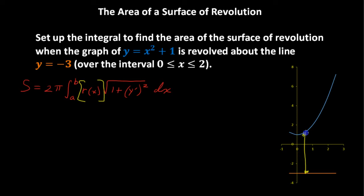So it's not just x squared plus 1. Let's draw this out. This distance is x squared plus 1. But we have an additional distance of 3 units, because we are not revolving about the x-axis, we are revolving about this line, y equals negative 3. So we have an additional distance of 3 units.